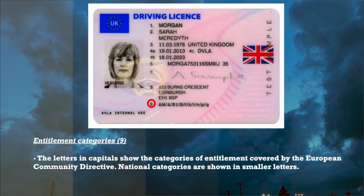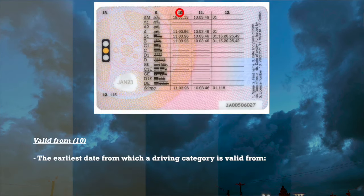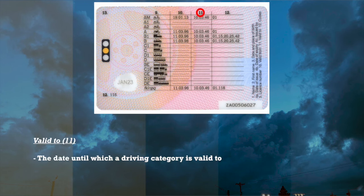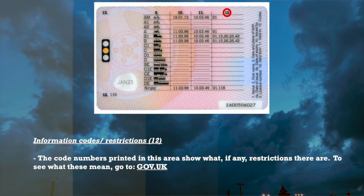9: the letters in capitals show the categories of entitlement covered by the European Community Directive. 10 shows the earliest date from which a driving category is valid from. 11 shows the date until which a driving category is valid to. 12 shows the code numbers, if any restrictions are there. To see what these code number restrictions mean, go to gov.uk.